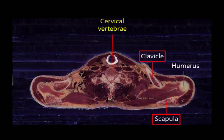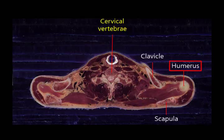The clavicle and scapula connect the torso bones and arm bones. You can easily touch your own clavicle and scapula. The scapula meets the humerus at the shoulder joint, and on this sectioned image, you can see the upper end of the humerus.